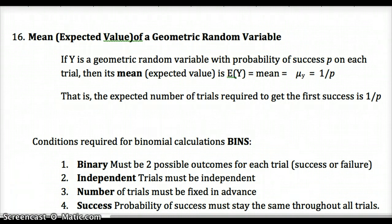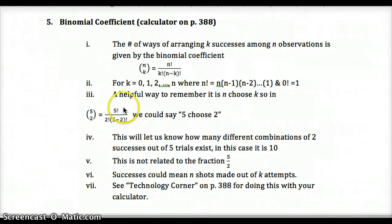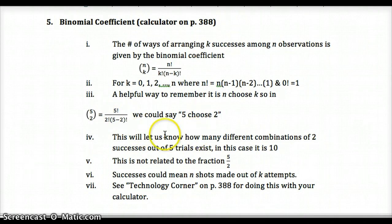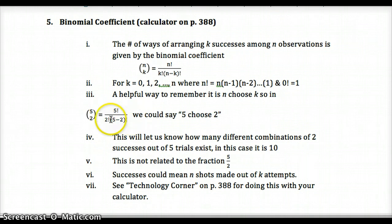A quick refresher on factorial notation: 5 factorial means 5 × 4 × 3 × 2 × 1 = 120. For five choose two: 5! divided by (2! × 3!) = 120 divided by (2 × 6) = 120/12 = 10. This tells us the number of ways to arrange k successes in n trials — like 2 heads in 5 coin flips having 10 different arrangements. There's a factorial button on your calculator, so use it.